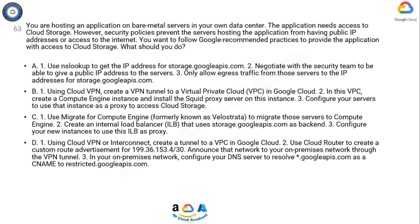Option D: 1) Using Cloud VPN or Interconnect, create a tunnel to a VPC in Google Cloud. 2) Use Cloud Router to create a custom route advertisement for 199.36.153.4/30 and announce that network to your on-premises network through the VPN tunnel. 3) In your on-premises network, configure your DNS server to resolve googleapis.com as a CNAME to restricted.googleapis.com. Now take 10 seconds to think about the answer.